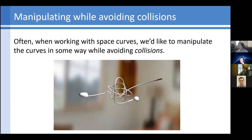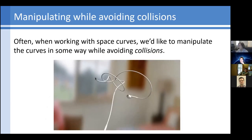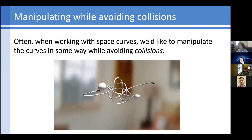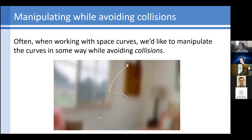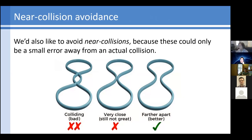Often when we're working with curves, we want to manipulate them without having them collide or pass through each other. Collisions are usually non-physical — in the real world, things cannot phase through each other. So if you have a collision in your simulation, that's usually undesirable. Beyond just collisions, we'd also like to avoid near-collisions, since these are basically just a small error away from actually becoming a collision. We introduce small errors all the time during simulations, so we really want to add robustness to whatever it is we're modeling.